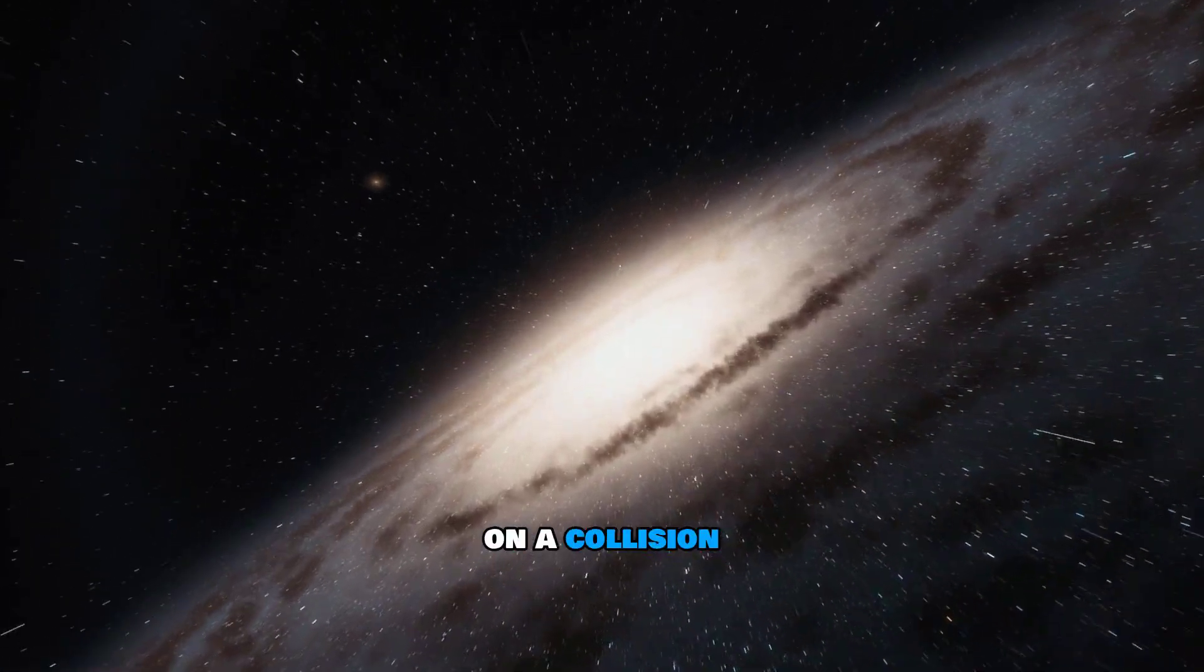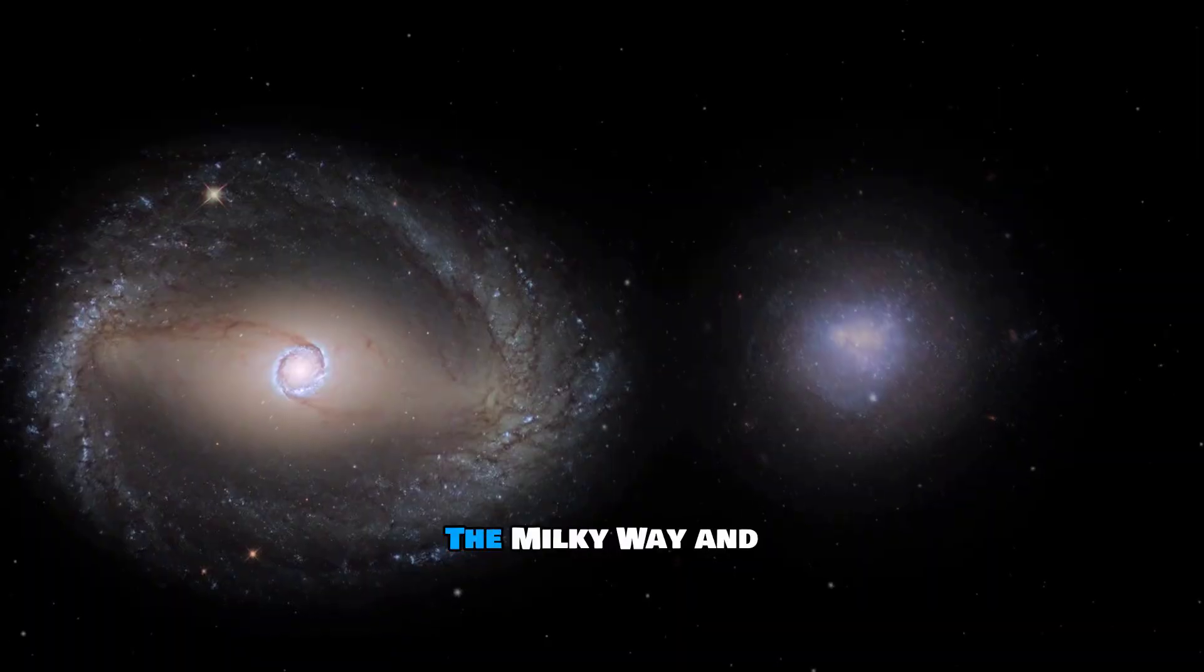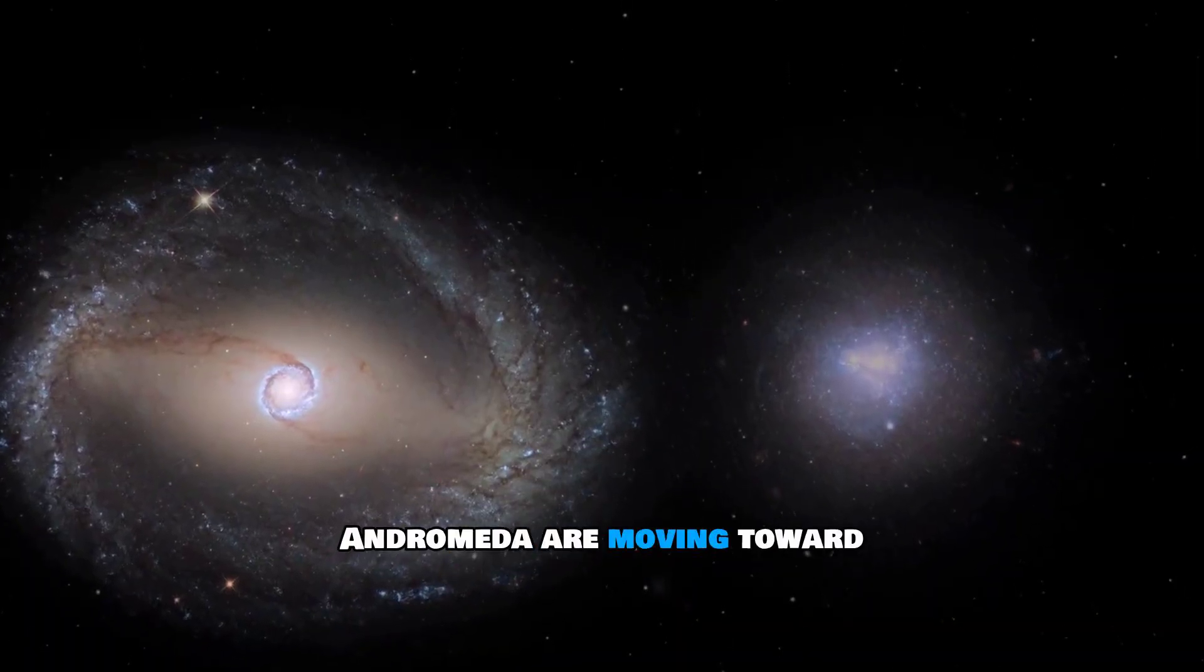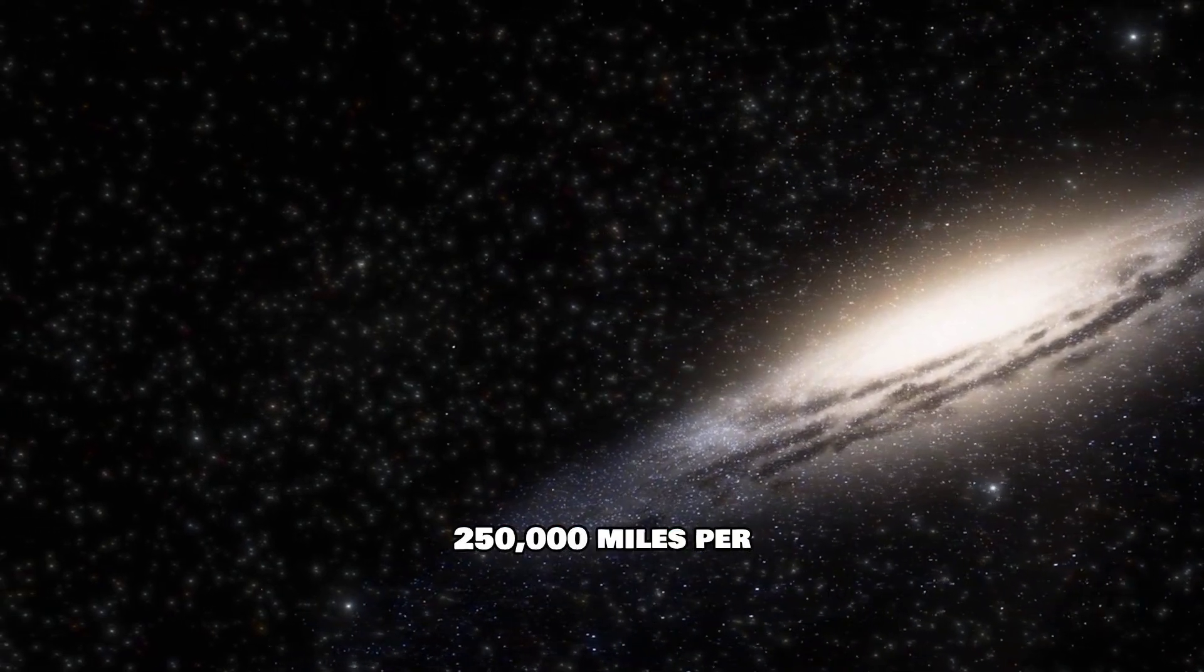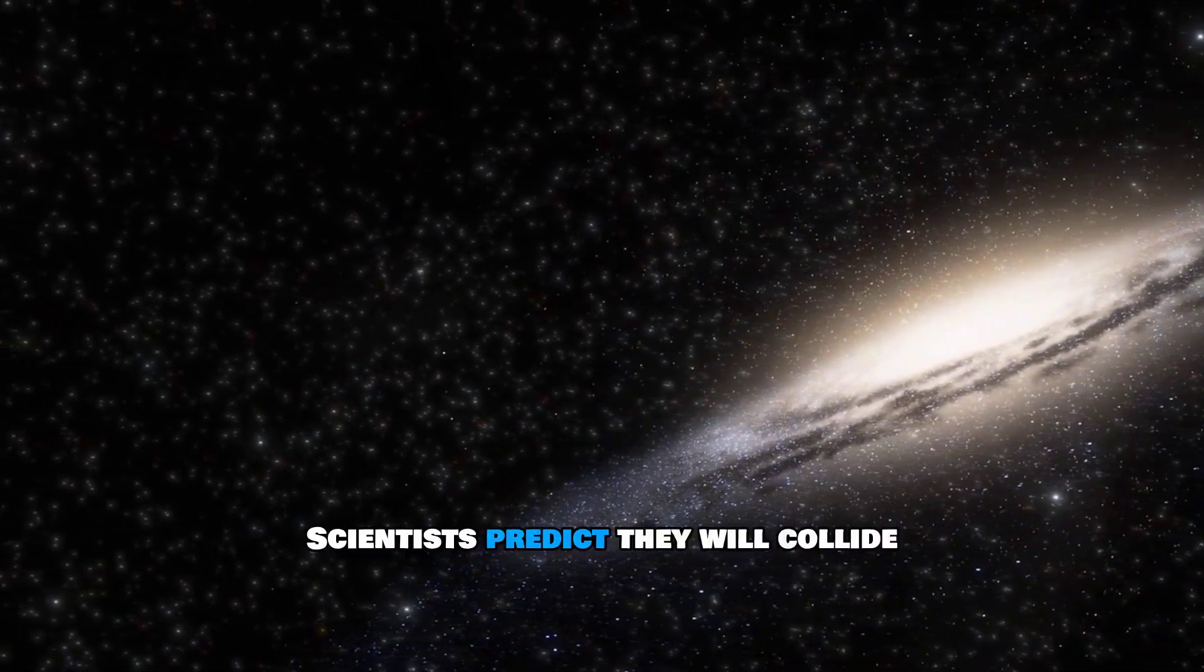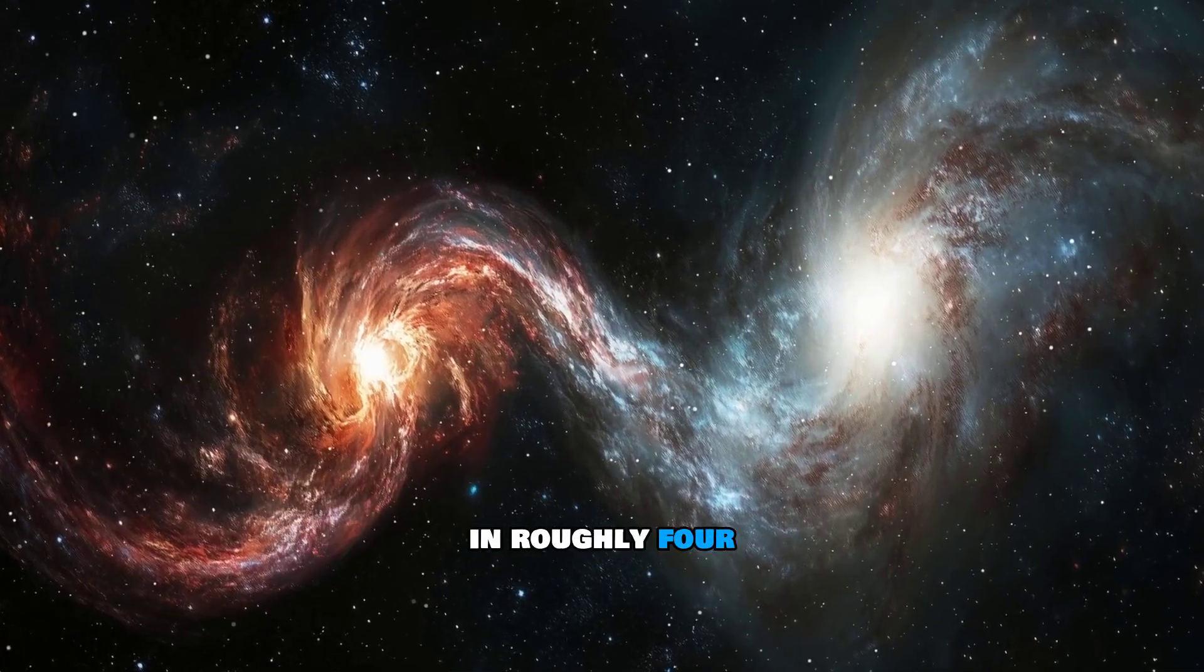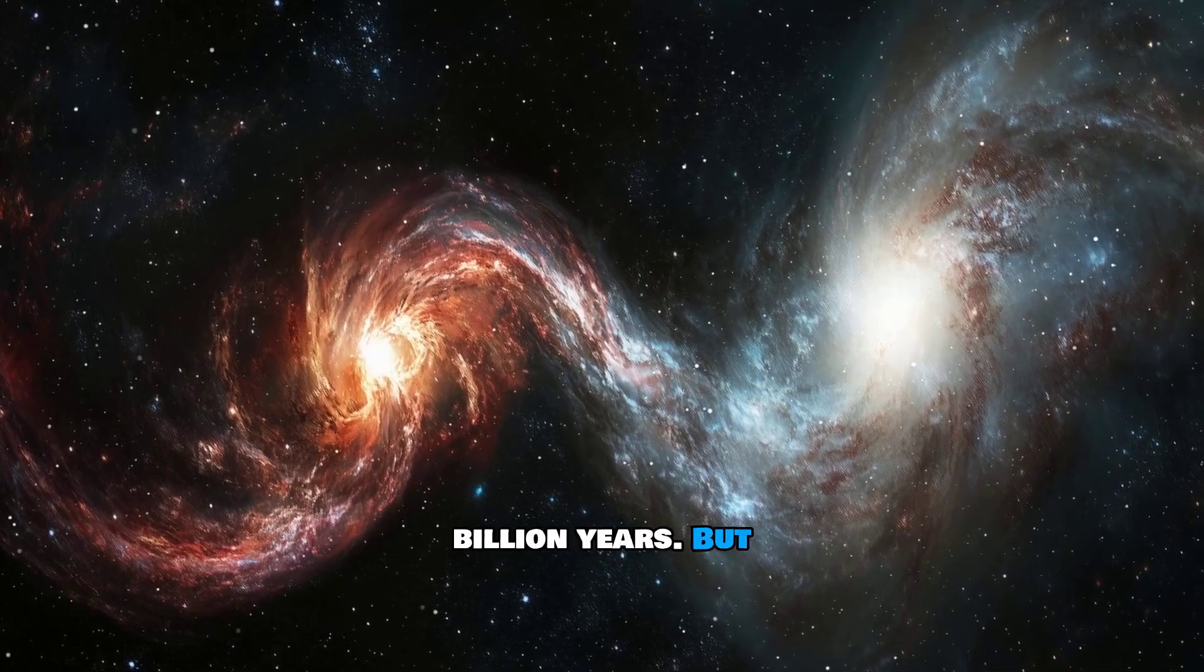We're on a collision course. The Milky Way and Andromeda are moving toward each other at a speed of about 250,000 miles per hour. Scientists predict they will collide in roughly 4 billion years. But don't worry.